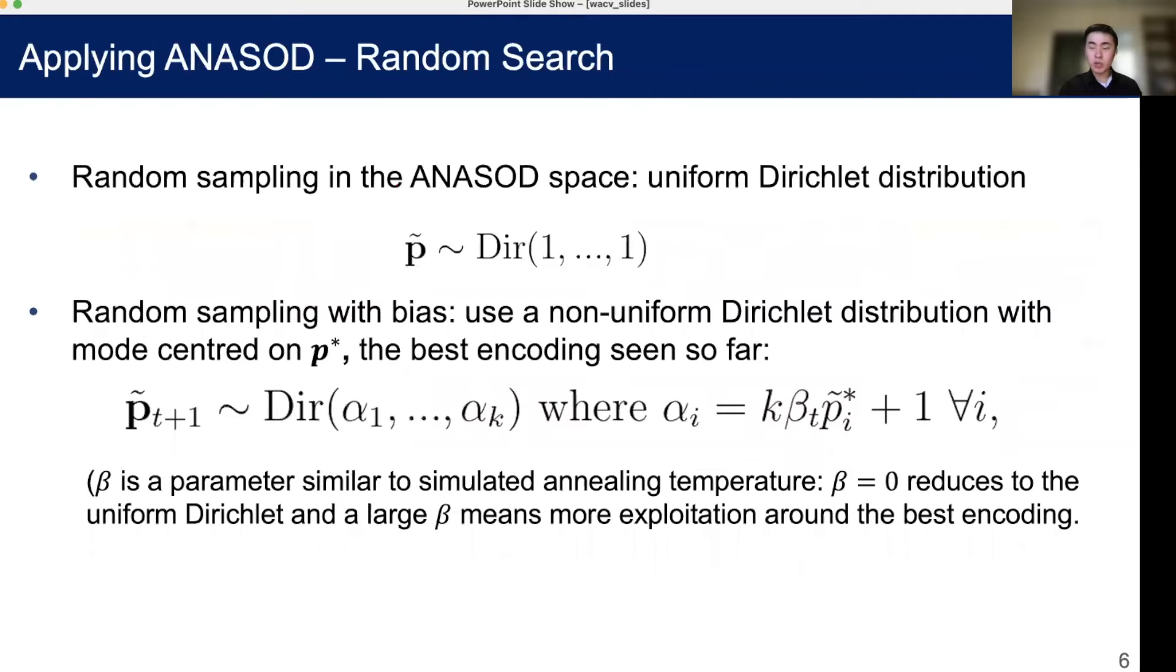Here we give some examples of how we would like to apply ANASOD. Firstly, we can use random sampling. Random sampling without any bias is simple in ANASOD because of its simplex space, which is just a uniform Dirichlet distribution. But alternatively, we could also bias the random search towards what we already know to be good architectures, using a non-uniform Dirichlet distribution shown here, with the mode centered on the best encoding seen so far.